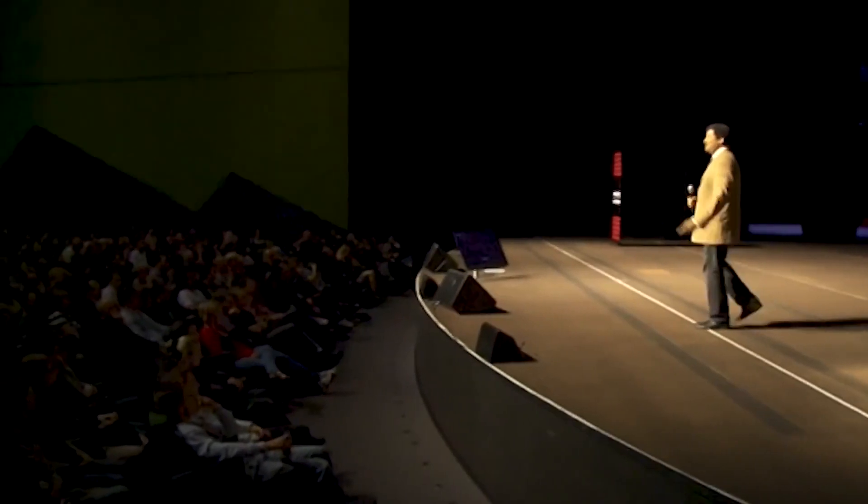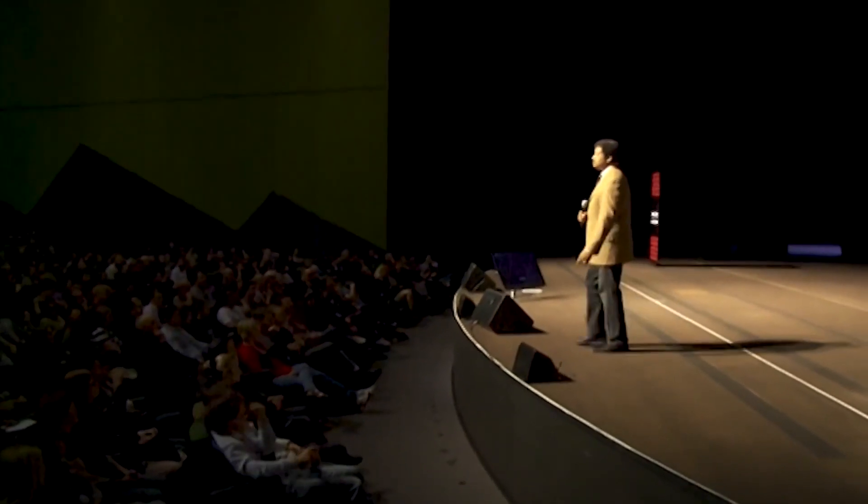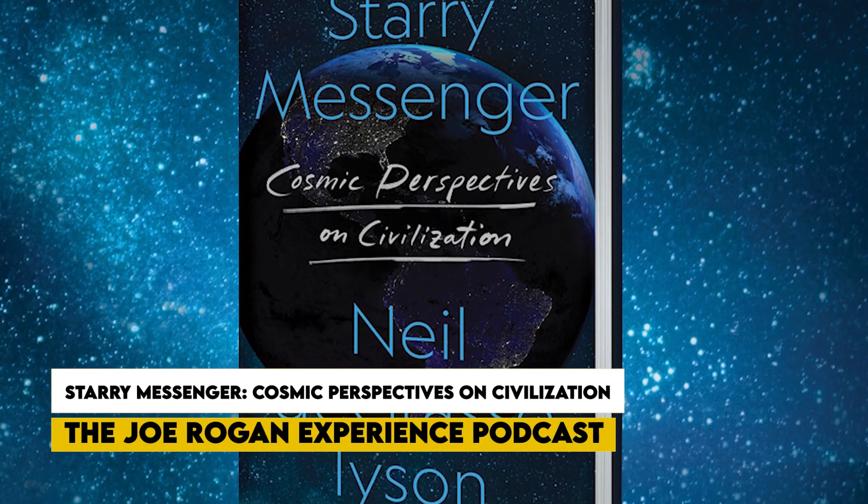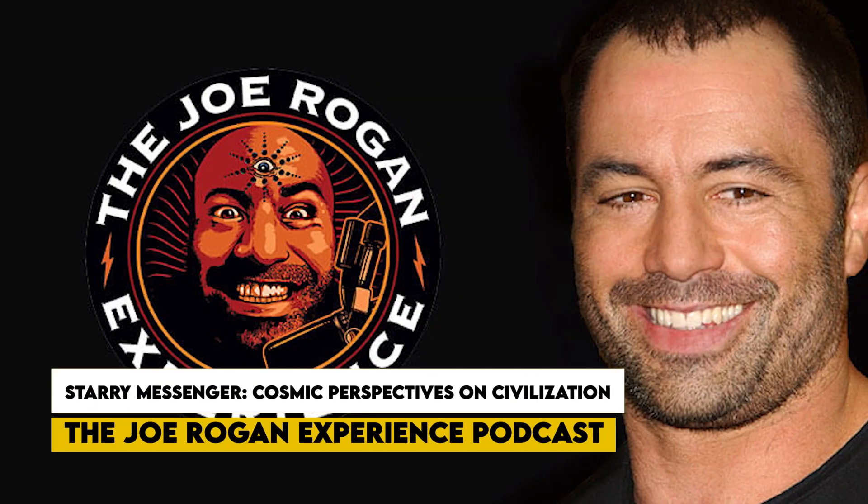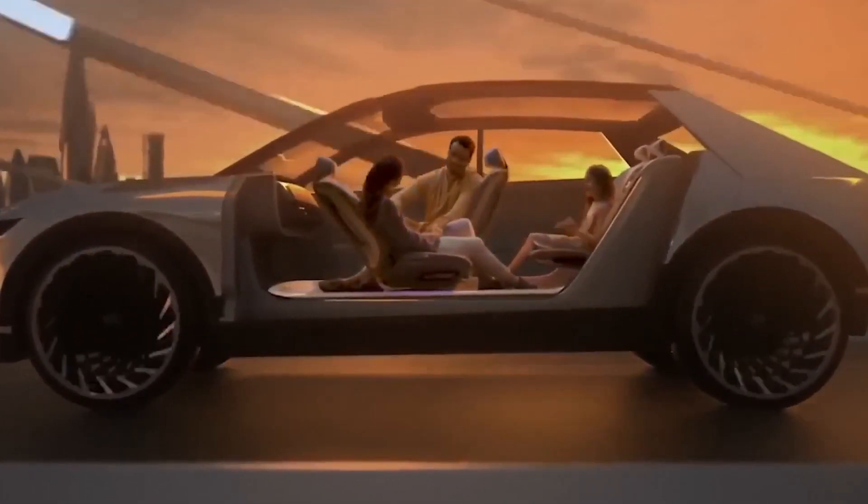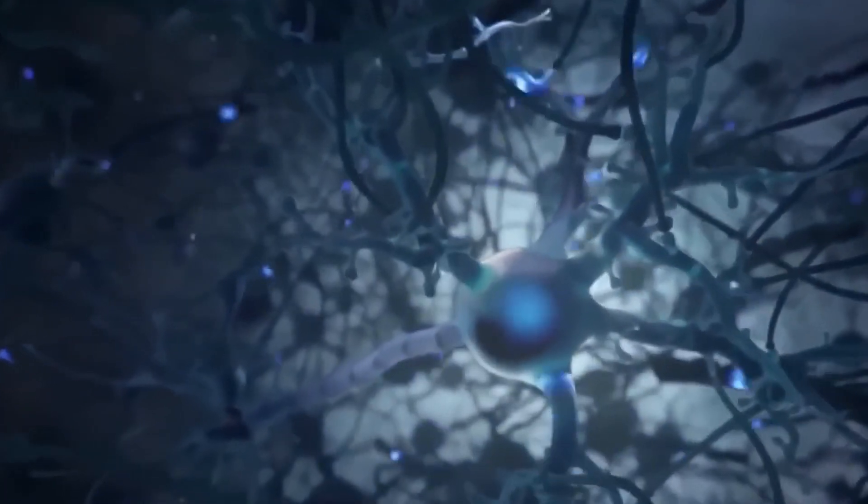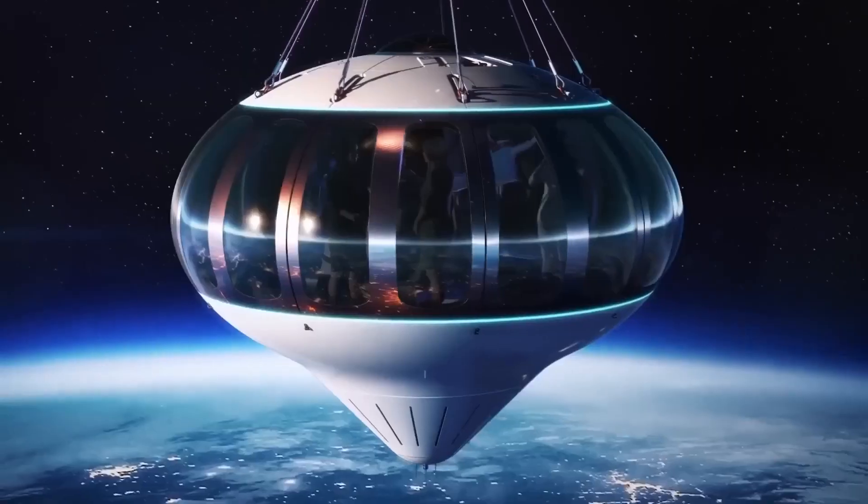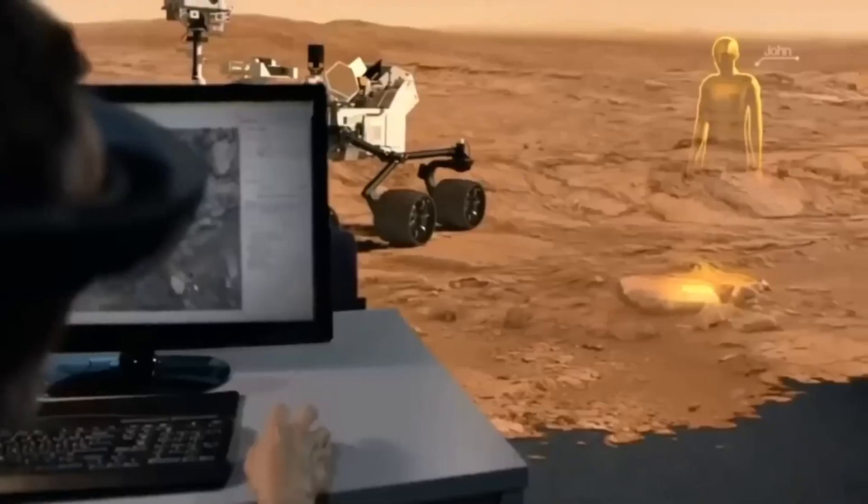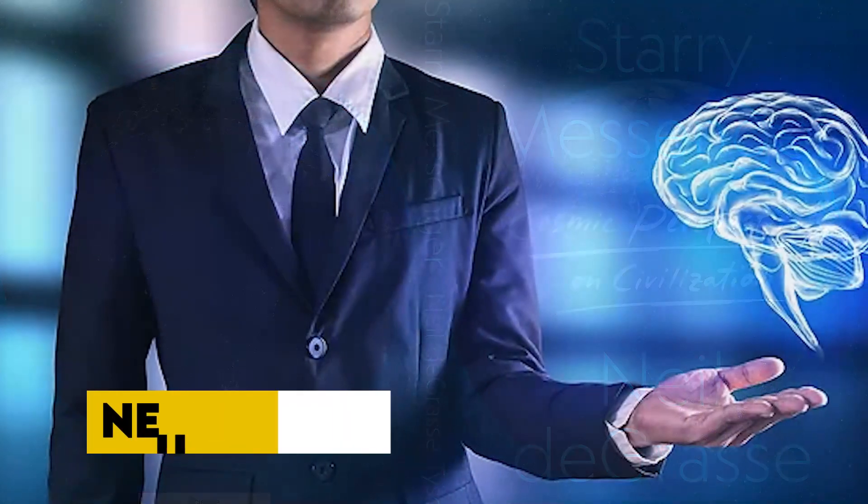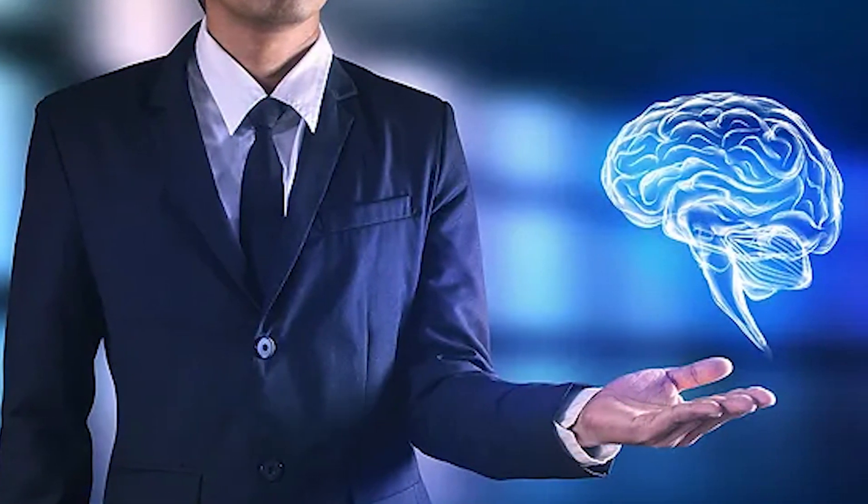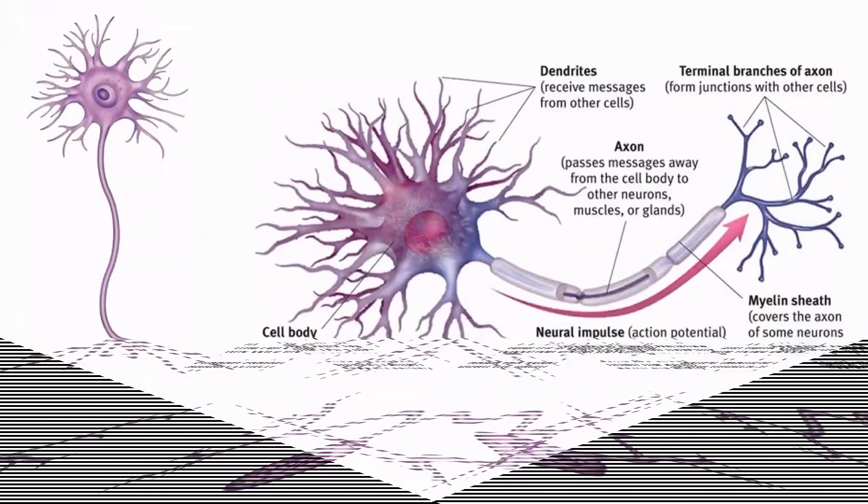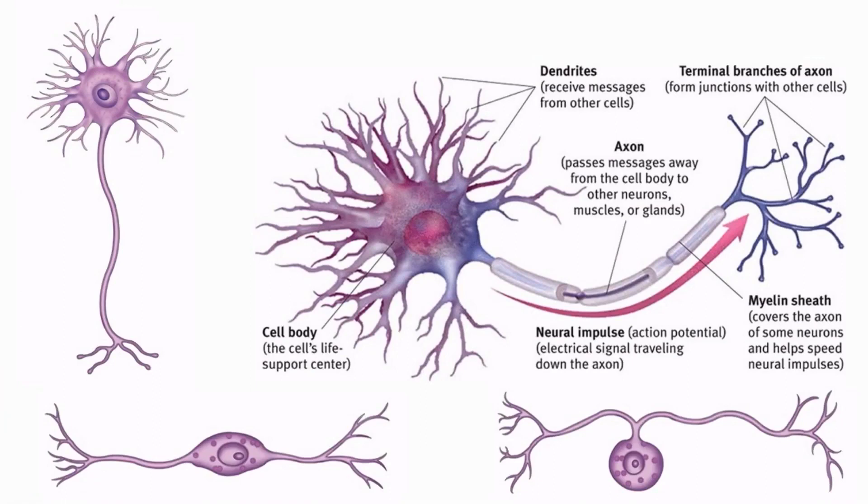DeGrasse Tyson recently discussed several predictions for the near future while promoting his new book, Starry Messenger: Cosmic Perspectives on Civilization, on the Joe Rogan Experience podcast. These included the rise of driverless vehicles, the potential abolition of traditional psychological employment due to advances in neuroscience, and the commercialization of space travel by 2050. Reading from his book, he said: Neuroscience and our understanding of the human mind will become so advanced that mental illness will be cured, leaving psychologists and psychiatrists without jobs.